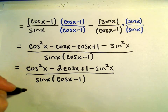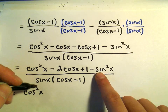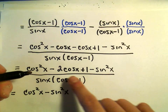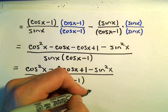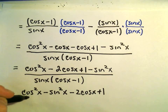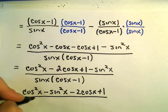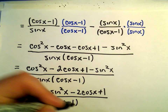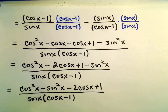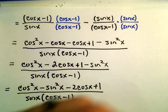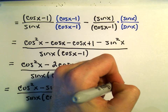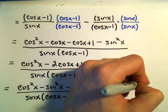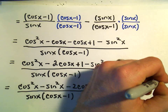I'm going to reorder things a little bit: we've got cosine squared x, then minus sine squared x, and then minus 2 cosine x plus 1. I'm just rearranging things to make the next step a touch clearer. This is where we bring in one of our trig identities — recall that sine squared x plus cosine squared x equals 1.